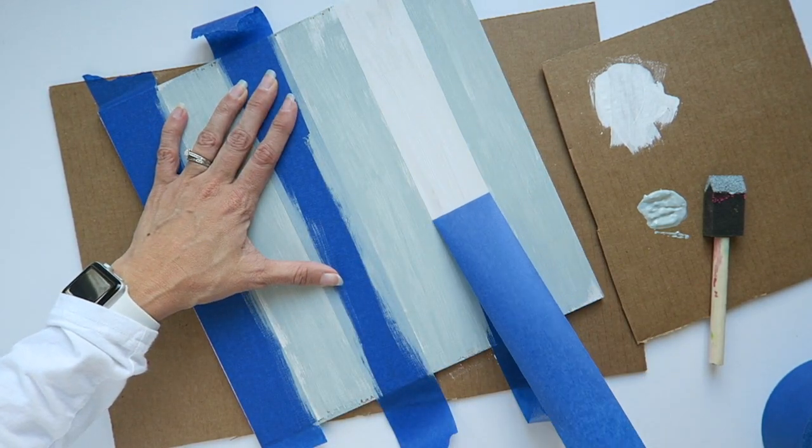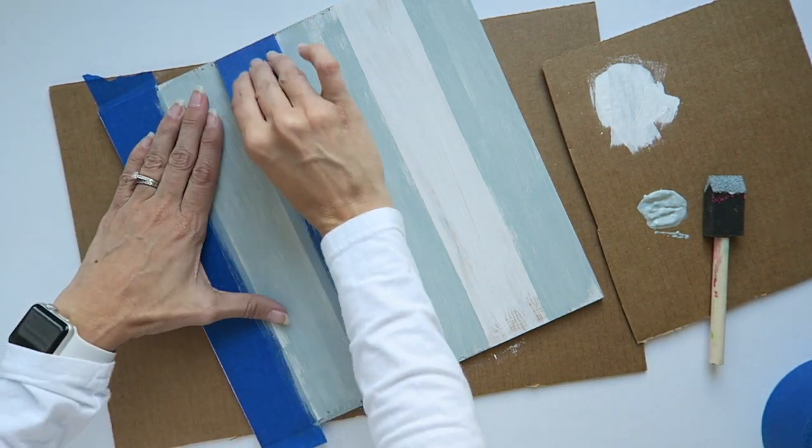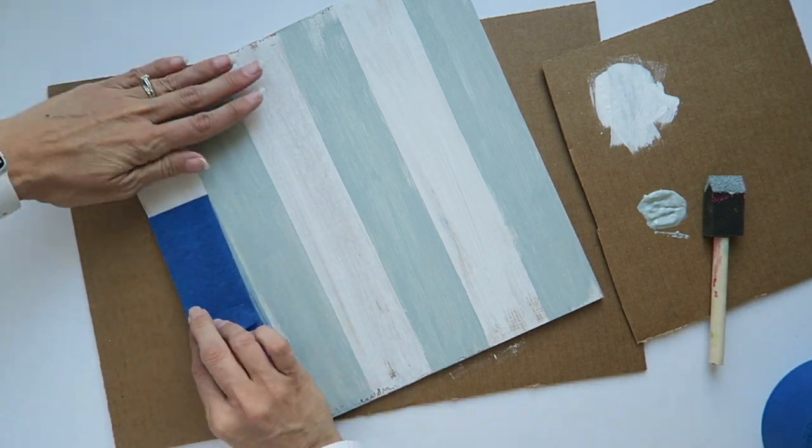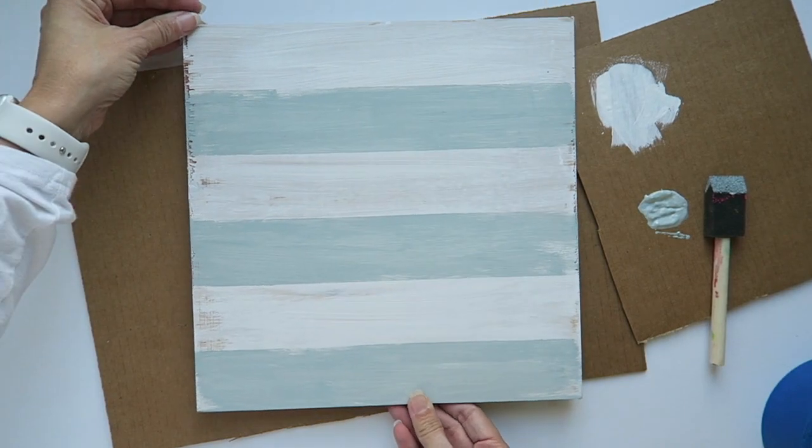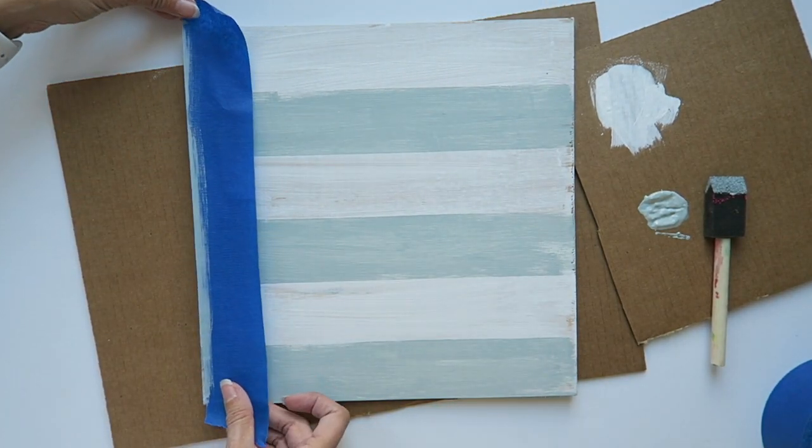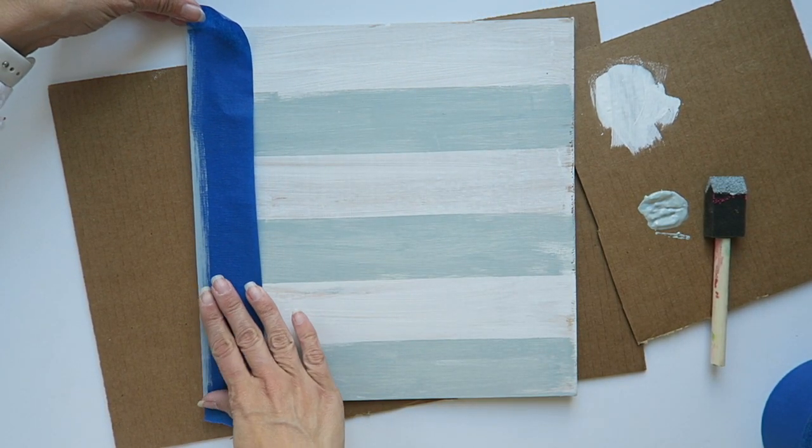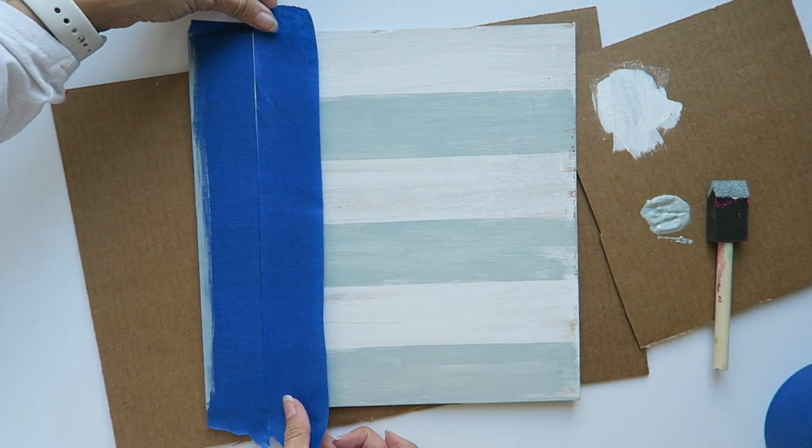Once it's dry, go ahead and peel back that tape, and you will see that you now have stripes on your project. Just what we want. Turn your project so that the stripes are going the other direction, and now you're going to tape perpendicular to those stripes.